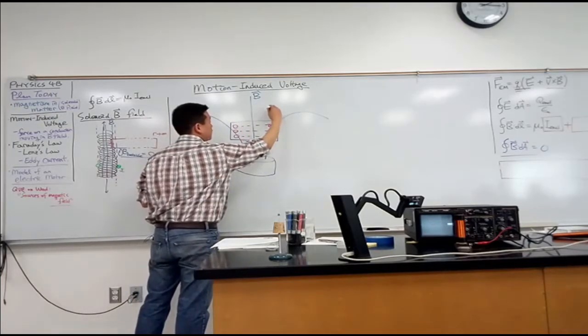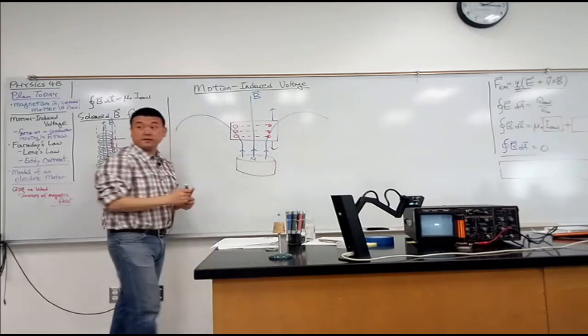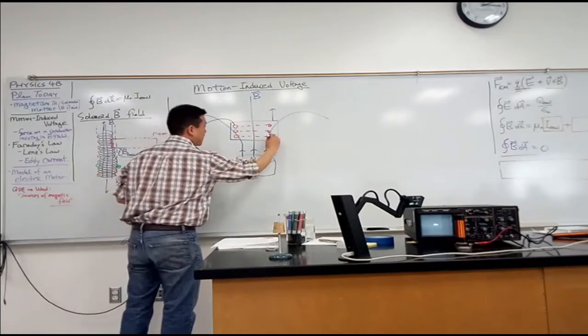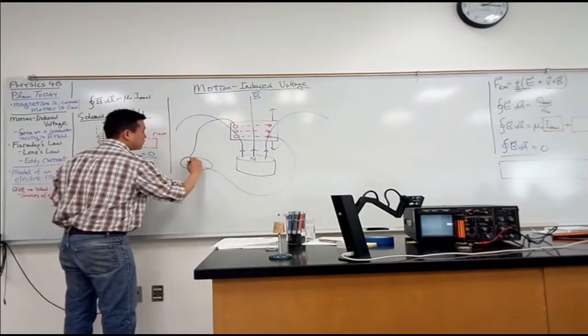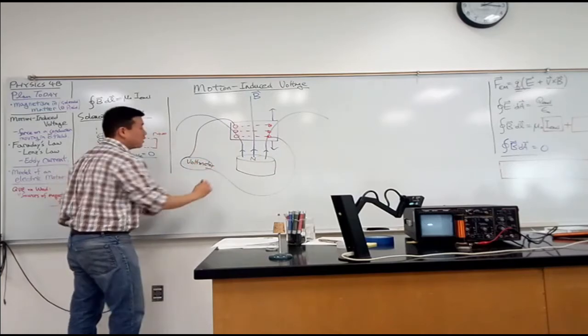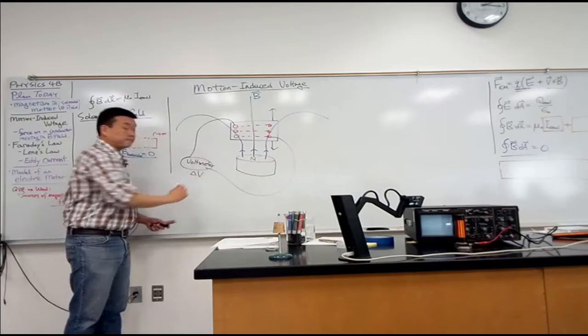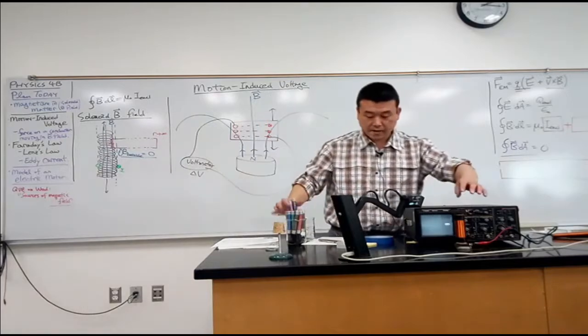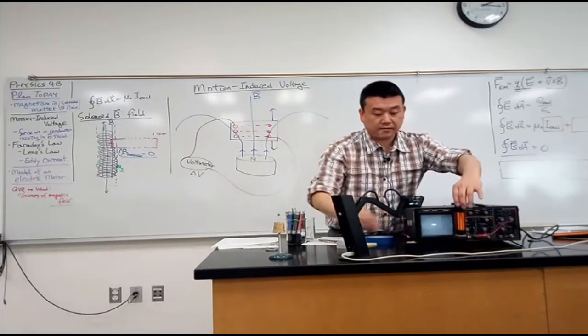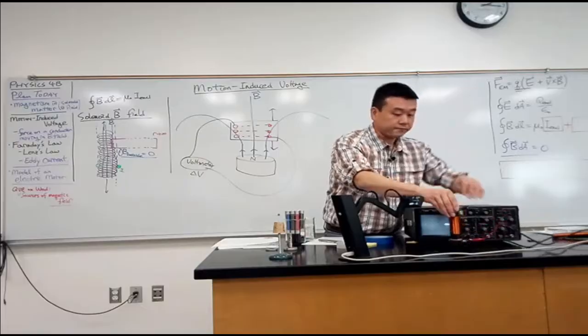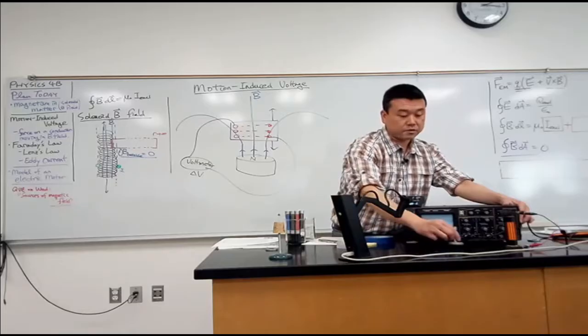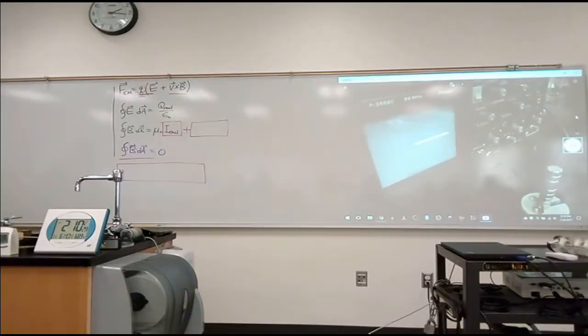When I take this and either move it up or down, then when I hook up something to one end and the other and measure this with a voltmeter, then I actually measure a difference in voltage here. Whereas when I didn't have magnet, there was no voltage difference. When I don't have this magnet, then I can move it down all I want, but there will be no voltage generated. It's only when there's this magnet here that you see voltage generated. The magnet must be playing some role.